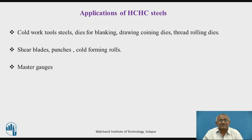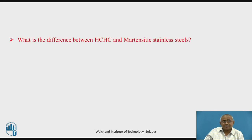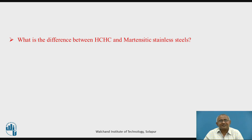What are the applications of HCSC steel? It is a cold work tool steel. Dies for blanking, drawing, coining, and thread rolling can be manufactured from HCSC steel. Some of the master gauges used in the calibration of normal gauges can also be manufactured from HCSC steel because of their non-shrinking property. Before going to the next variety of tool steel, I will pose one question: what is the difference between HCSC steel and martensitic stainless steel? A thought shall be given to this question.